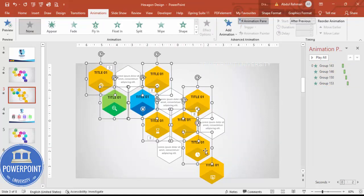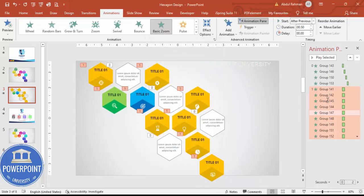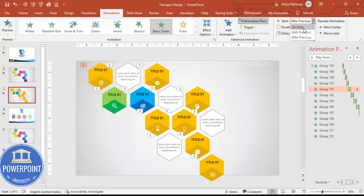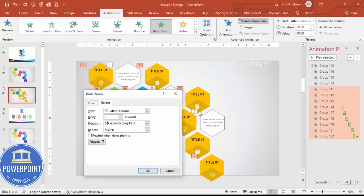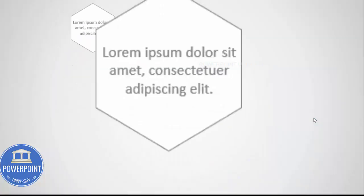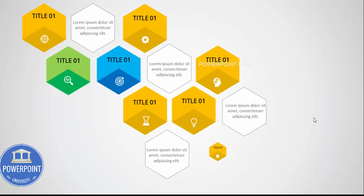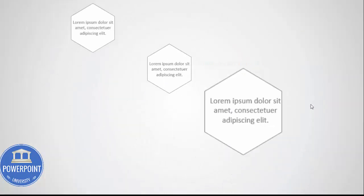Apply the same Basic Zoom animation to the nine option groups: Add Animation > Basic Zoom, set to After Previous. Right-click > Effect Options, and this time set it to Zoom In with timing of 0.3 seconds. Finally, set the first trigger to On Click, so when you click the slide the options animate in.